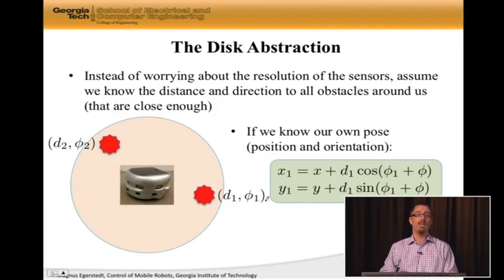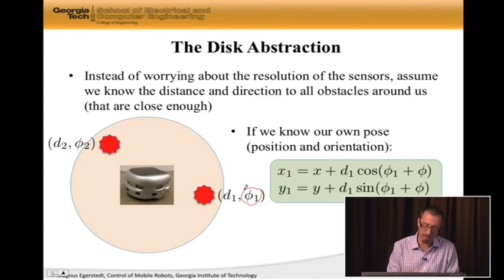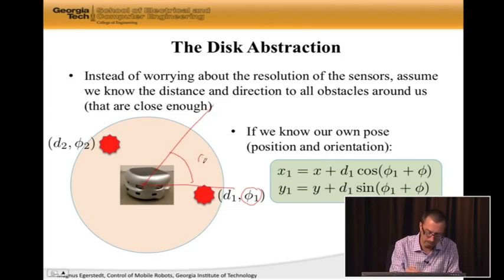So, let's do that. If we have that, and if we know our own pose. So, we know x, y, and phi. Then, since the measured headings to the obstacles. So, this is phi one, which we're measuring. And we're measuring this relative to our own orientation. Let's say that our orientation is this, right? So, here is phi, and here is phi two, say.